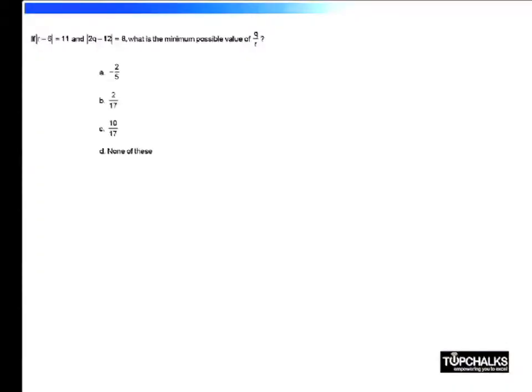This question is based on the simple concept of the definition of modulus. If you consider |r - 6| = 11, this implies r - 6 must be either +11 or -11. It would be +11 for r = 17, and -11 for r = -5.